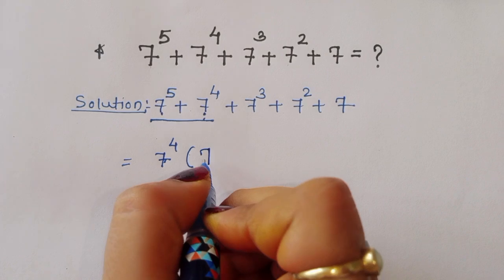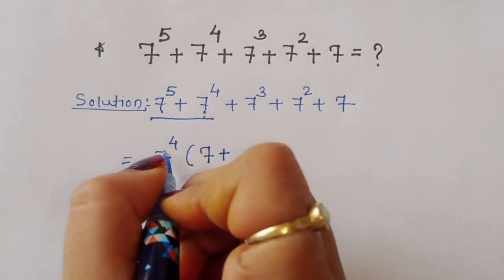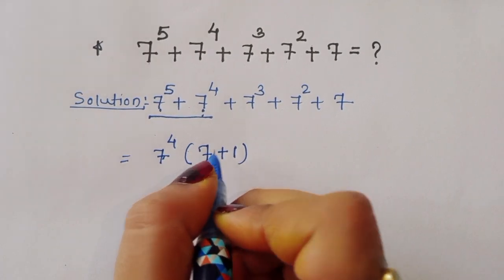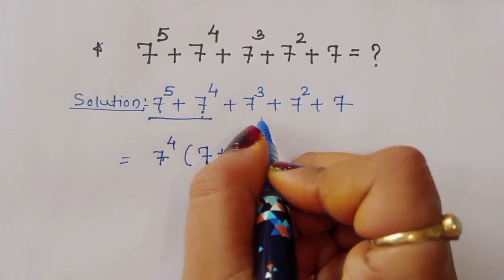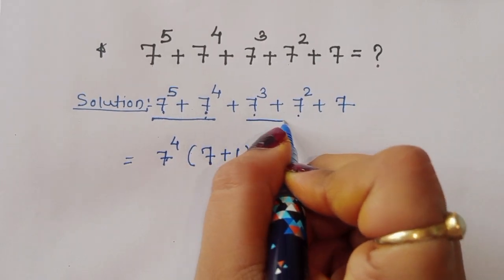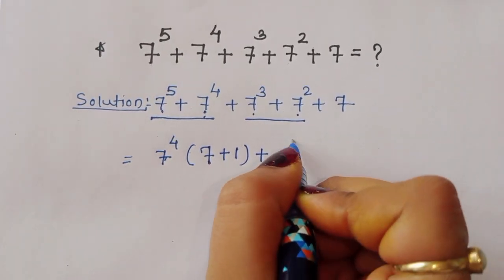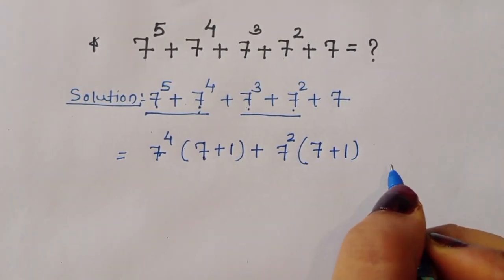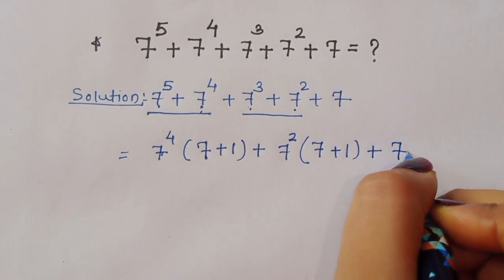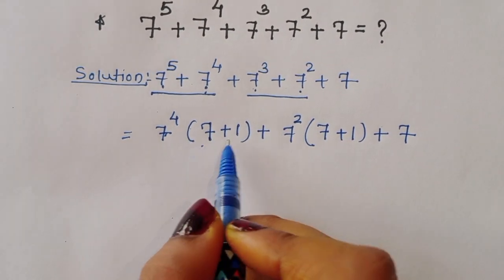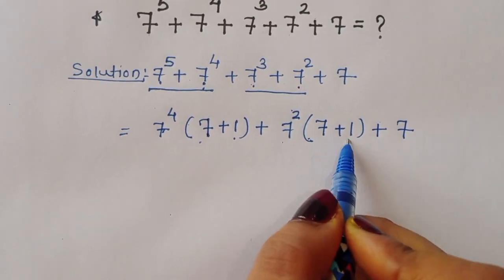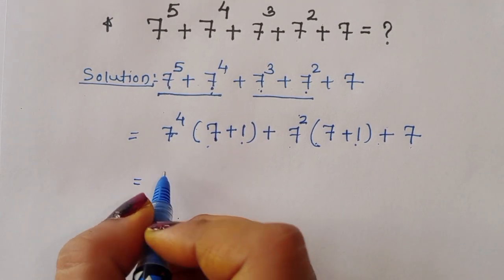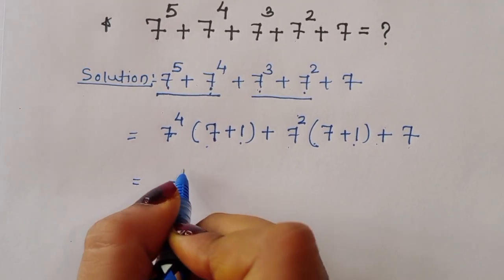Taking 7 power 4 common, we are left with 7 plus 1 from the first two terms, and similarly 7 power 2 times 7 plus 1, and then plus 7. Now 7 plus 1 gives us 8, so both bracketed terms become 8.